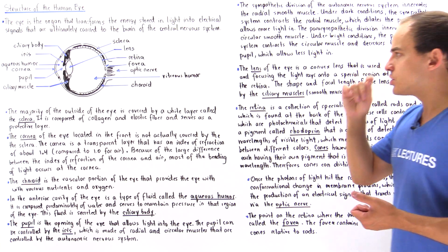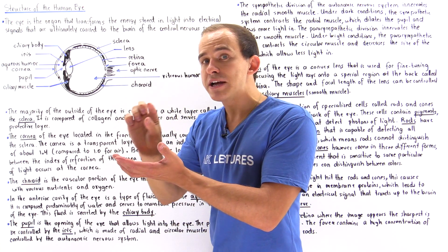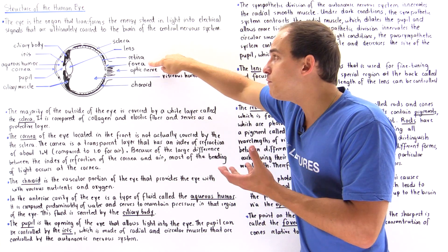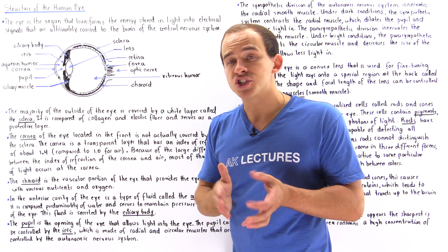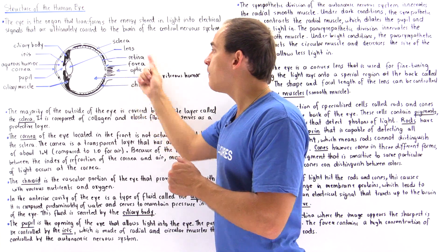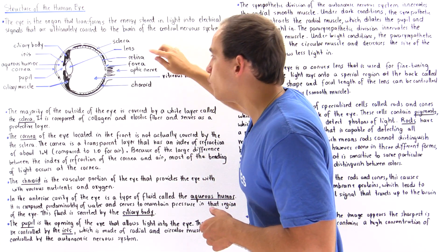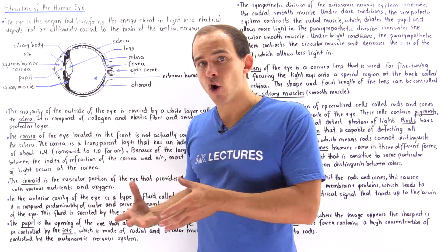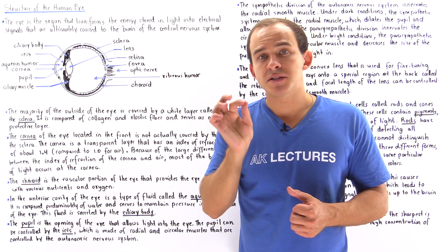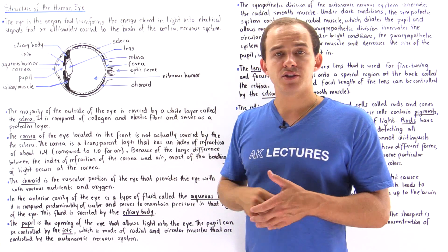The last portion to discuss is the fovea. The fovea is a specialized, localized region found on the retina that consists predominantly of cones. We have a very high concentration of cones in the fovea compared to rods, and that is exactly why the fovea produces the sharpest image. The fovea is the part of the retina that forms the sharpest image because it contains a high concentration of cones.